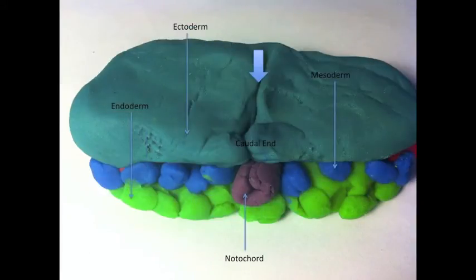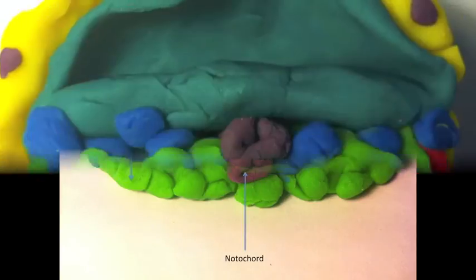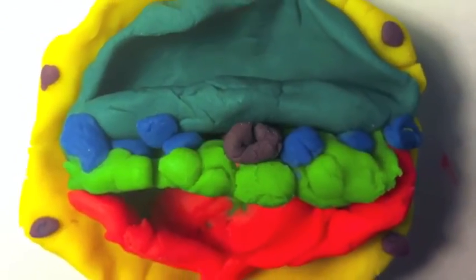Now the primitive streak regresses caudally until it has completely disappeared. As we zoom out, gastrulation is complete and neurulation will commence.